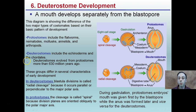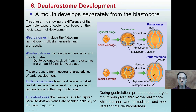Deuterostomes evolved from protostomes more than 630 million years ago. There are key differences: in deuterostomes, blastula cleavage is radial — splitting of cells occurs parallel or perpendicular to the major polar axis. In protostomes, cleavage is spiral, because the division planes are oriented at an oblique angle to the polar major axis. We see an eight-cell stage with radial cleavage versus spiral cleavage. Deuterostomes also show the development of a digestive tube during gastrulation, making them more developed.